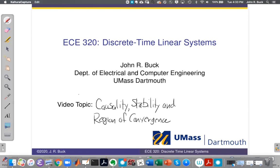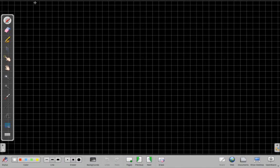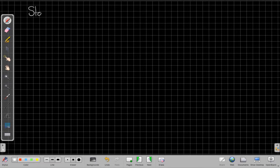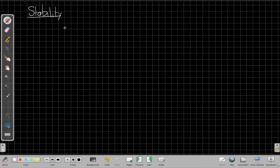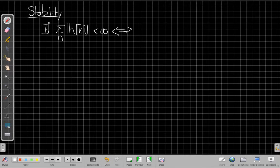Okay, so tonight's video is about causality, stability, and the region of convergence and how they connect. Let's start with the discussion of stability. We saw back at the start of the class we said that if we have the sum of the absolute value of the impulse response over all time is finite, this was equivalent to saying the system is stable, or saying an LTI system is stable.